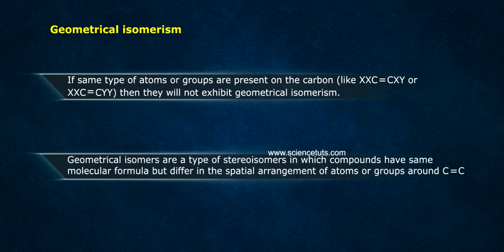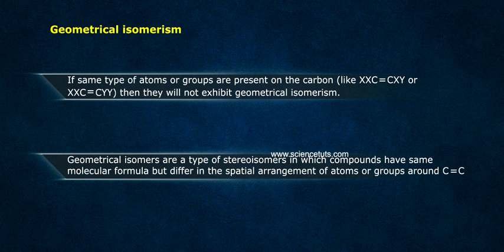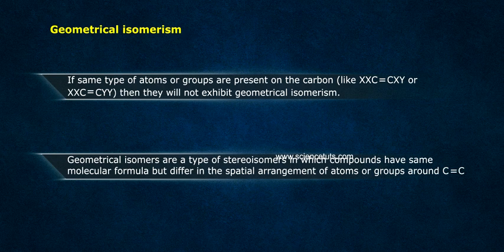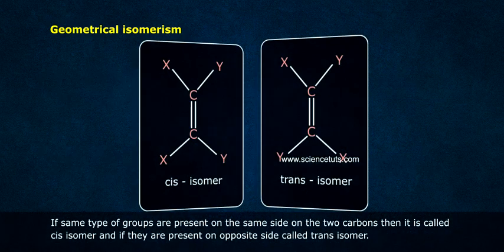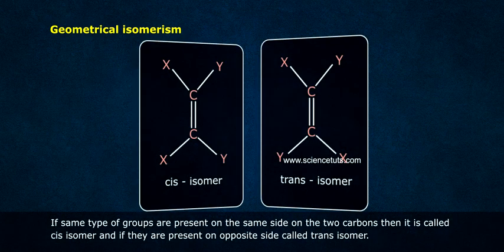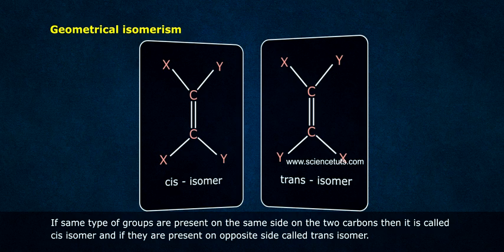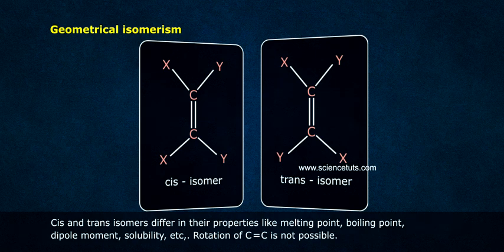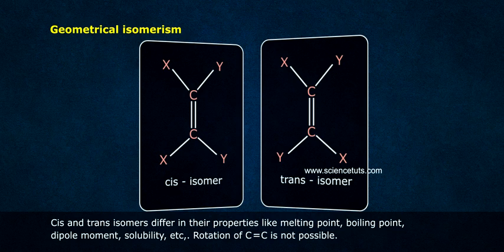Geometrical isomers are a type of stereoisomers in which compounds have same molecular formula but differ in the spatial arrangement of atoms or groups around C=C. If same type of atoms or groups are present on the same side on the two carbons, then it is called cis isomer and if they are present on opposite side, called trans isomer.